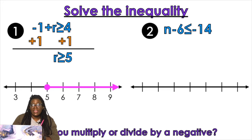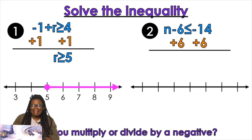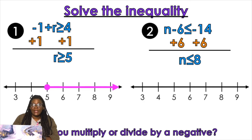So for the next one, I have N minus six is less than or equal to negative 14. I need to get rid of that minus six — add six to both sides. So N is less than or equal to negative eight. Now I would look at my number line, find negative eight, and shade all the way to the left.